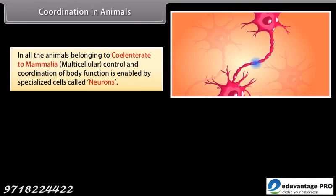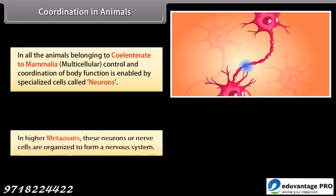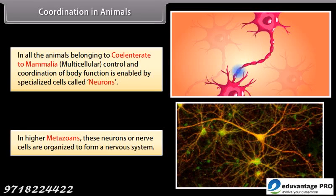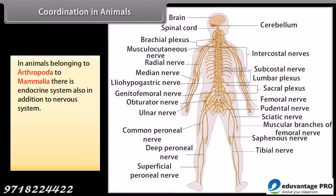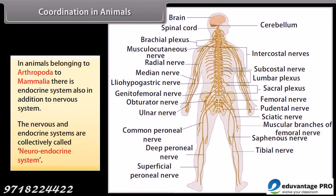In all animals from coelenterates to mammalia, multicellular control and coordination of body function is enabled by specialized cells called neurons. In higher metazoans, these neurons are organized to form a nervous system. In animals from arthropoda to mammalia, there is an endocrine system in addition to the nervous system. The nervous and endocrine systems are collectively called the neuroendocrine system.